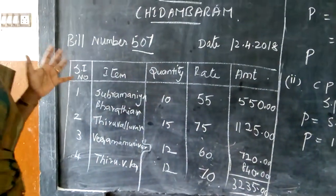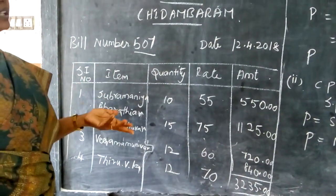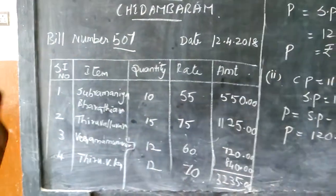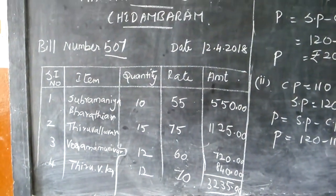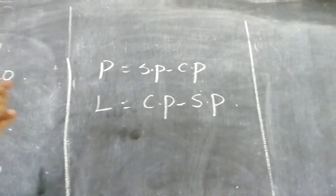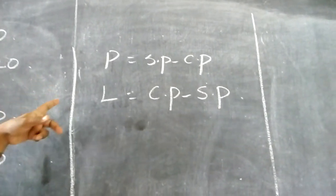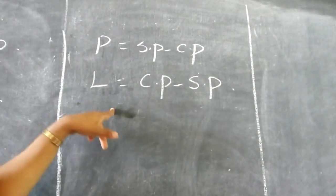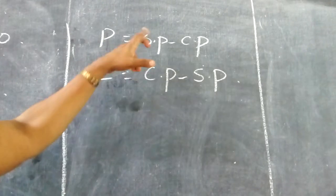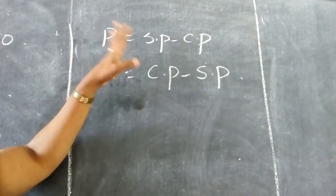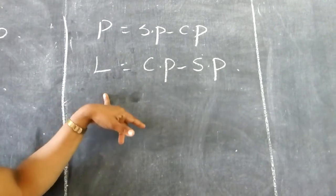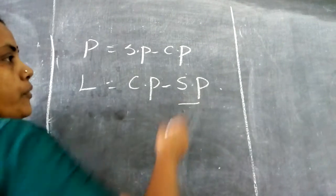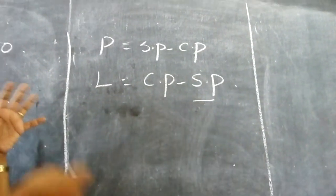Now we are going to discuss about the cost price, selling price, profit and loss. How to find out. Profit is nothing but SP minus CP. And loss is nothing but CP minus SP. Profit means selling price minus cost price. Always selling price should be more than the cost price. And for the loss, cost price will be more than the selling price. Cost price is the original value.